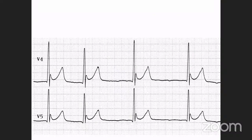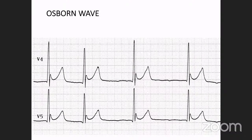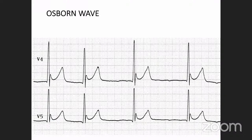Another cause of a J wave is the Osborne wave, seen in hypothermia. Other causes include hypercalcemia and Brugada syndrome. Brugada syndrome is a channelopathy involving a mutation in sodium channels on the right ventricular outflow tract, producing abnormal conduction problems there and serving as a substrate for ventricular tachycardia and sudden cardiac death. One way to differentiate Osborne wave from hypercalcemia is to look at the QT interval — it is prolonged in hypothermia but shortened in hypercalcemia.